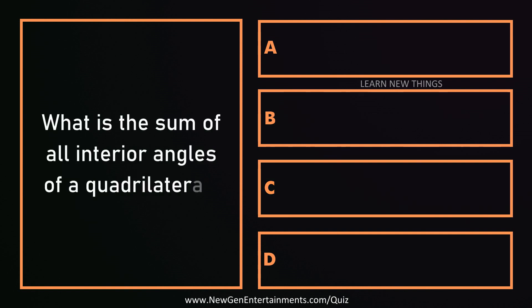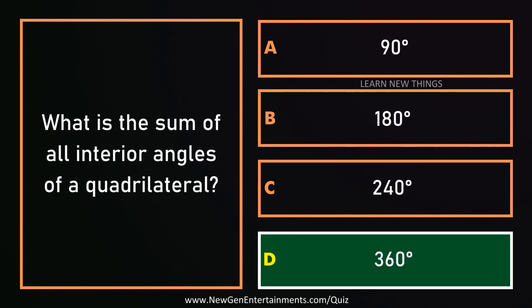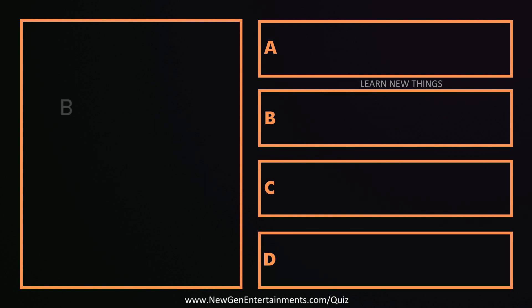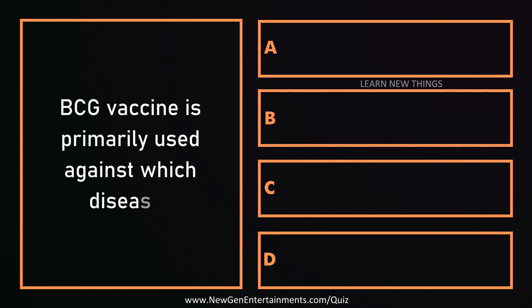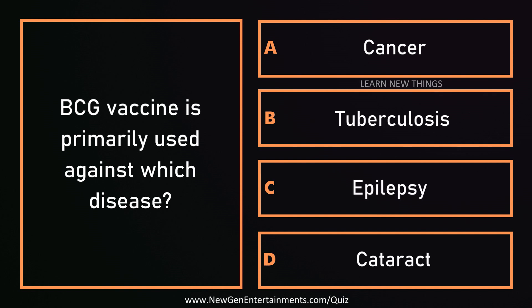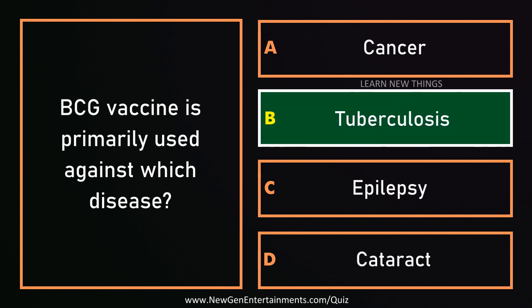What is the sum of all interior angles of a quadrilateral? 360 degrees. The BCG vaccine is primarily used against which disease? Tuberculosis.